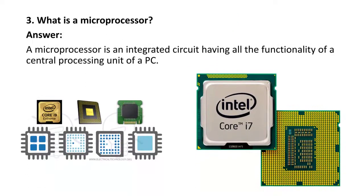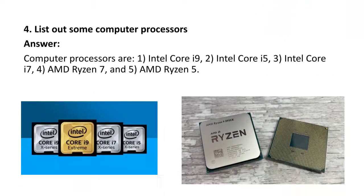Next question: what is a microprocessor? A microprocessor is an integrated circuit having all functionality of a central processing unit of a PC. Here you can see an image of a microprocessor. There are different generations of microprocessors — here you can see the 7th generation and 9th generation microprocessors.